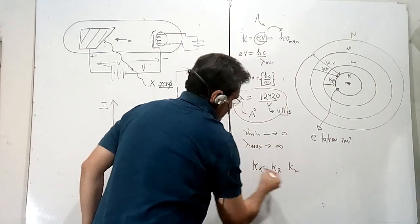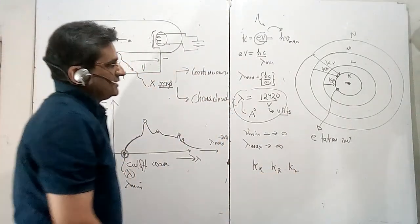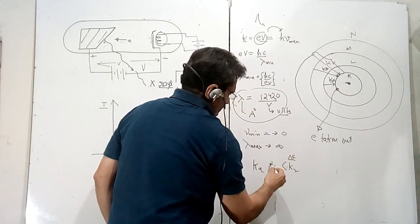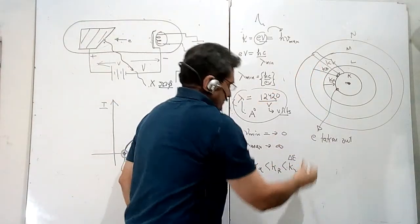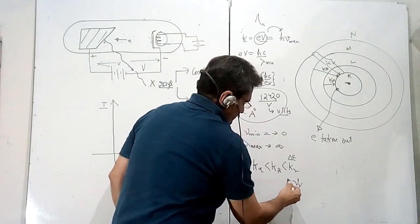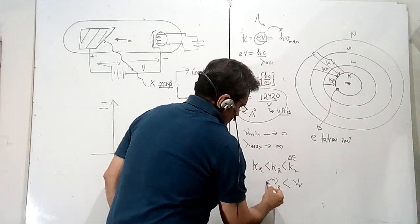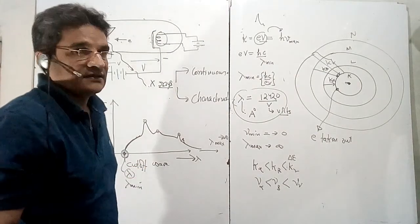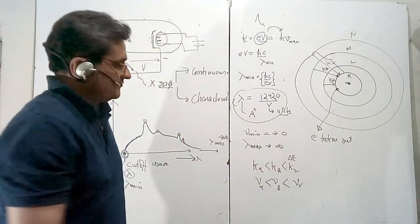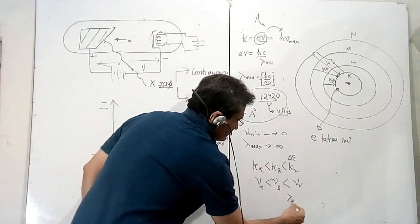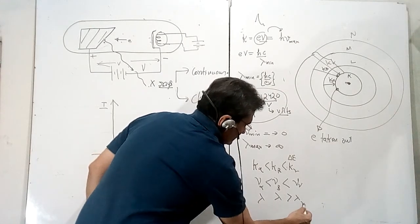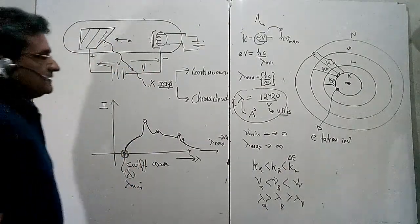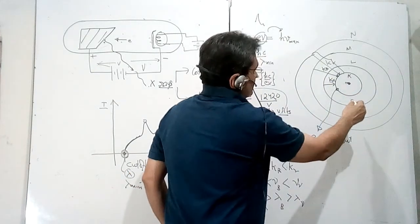K alpha, K beta, and K gamma each have their own wavelength. The energy of the transition is maximum for K gamma. So if I write delta energy: K gamma is maximum, then K beta, then K alpha. Therefore, the frequency for K gamma is maximum and frequency for K alpha is the least. Lambda is just the reverse — lambda for K alpha is the largest and for K gamma the smallest — since frequency and wavelength are inversely proportional.